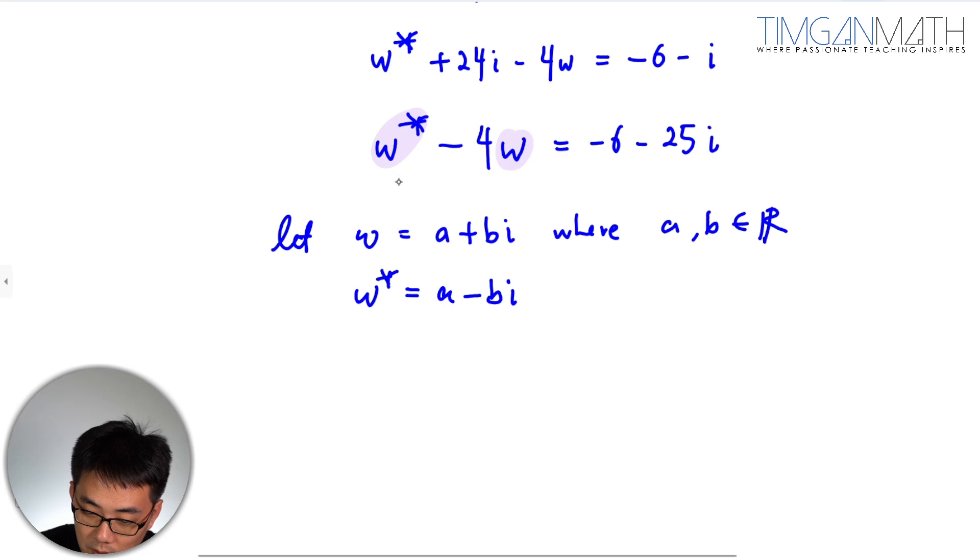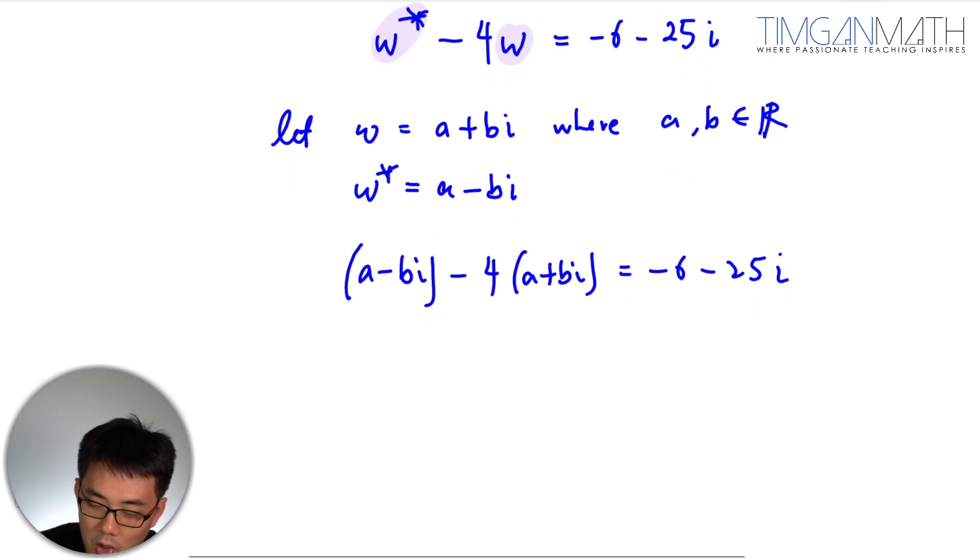So in this case here, you get (a minus bi) minus 4(a plus bi) equals minus 6 minus 25i. Then you try and compare here. So this is minus 3a minus minus 5bi, which is minus 3a plus 5bi.